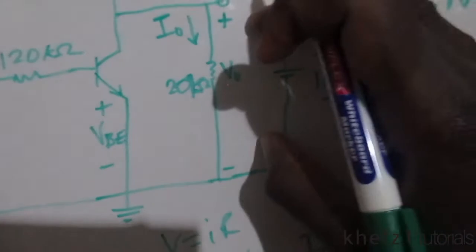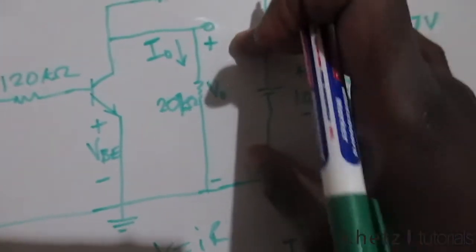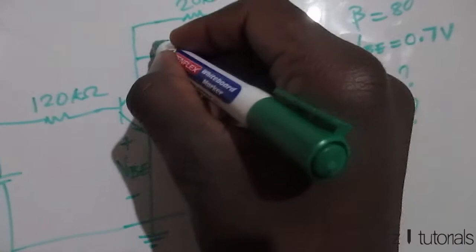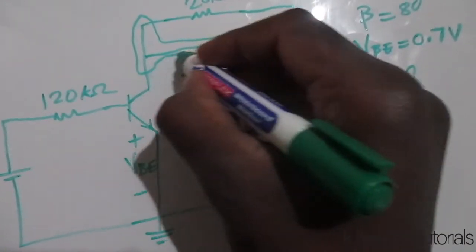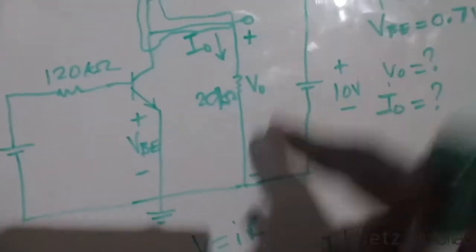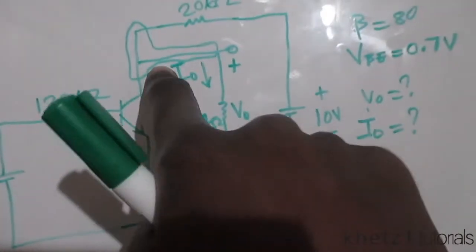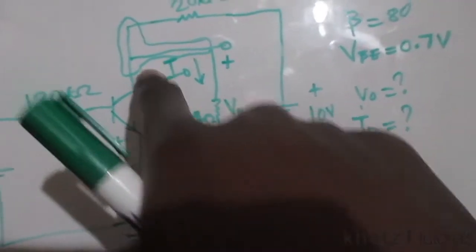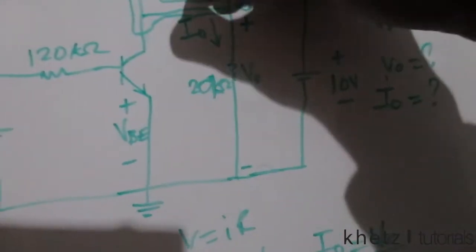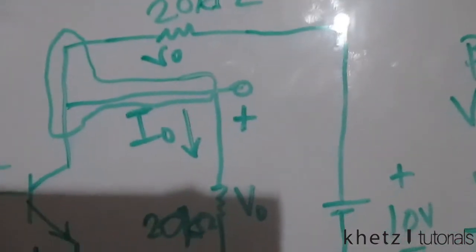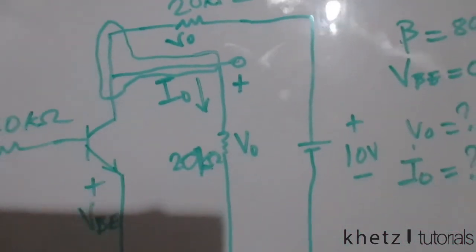Another conclusion we can make: the voltage across this resistor is measured from the top node to ground. That means the voltage from this node to ground is Vo minus zero, which means this top node is Vo.